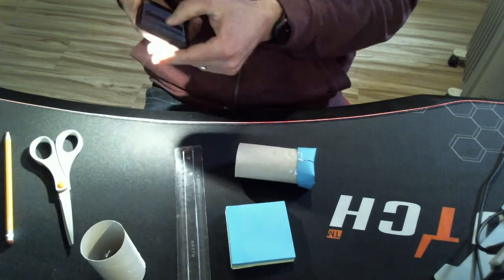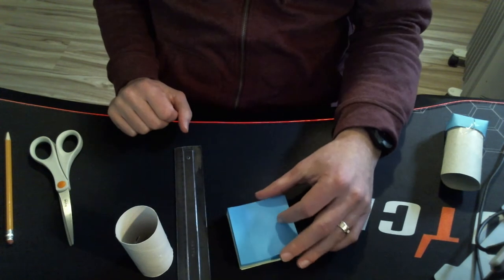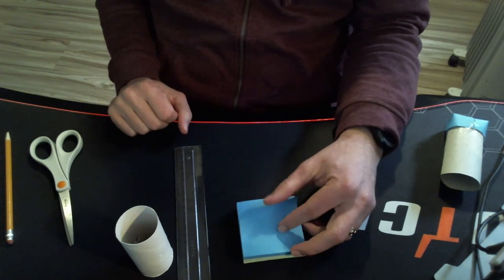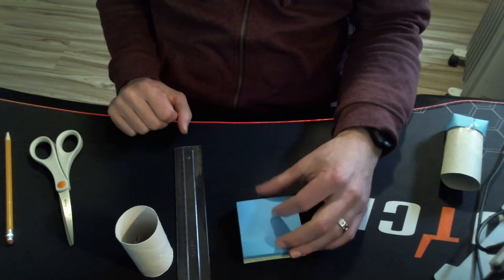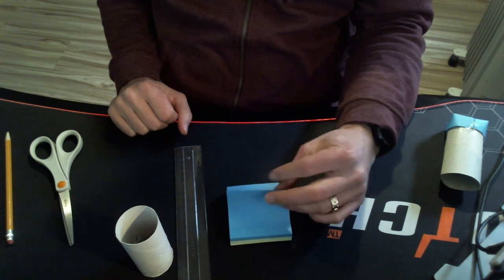So to start off, we need a toilet paper tube. We need some paper. I'm going to use post-it notes. They're just about the perfect size, and they're really easy to work with because they stick together. If you don't have post-it notes, then paper is great.